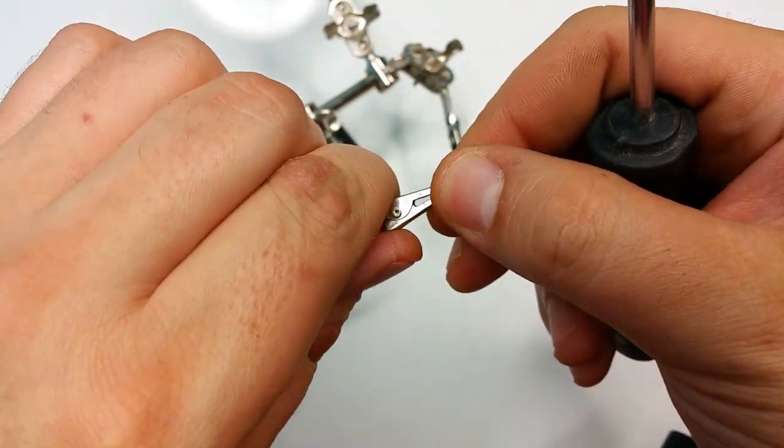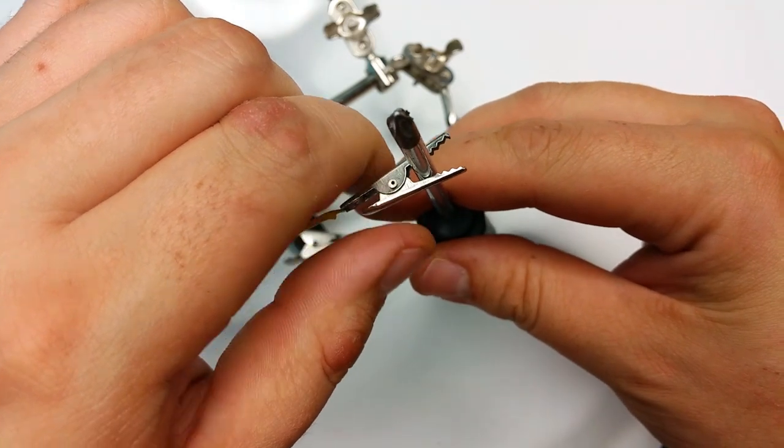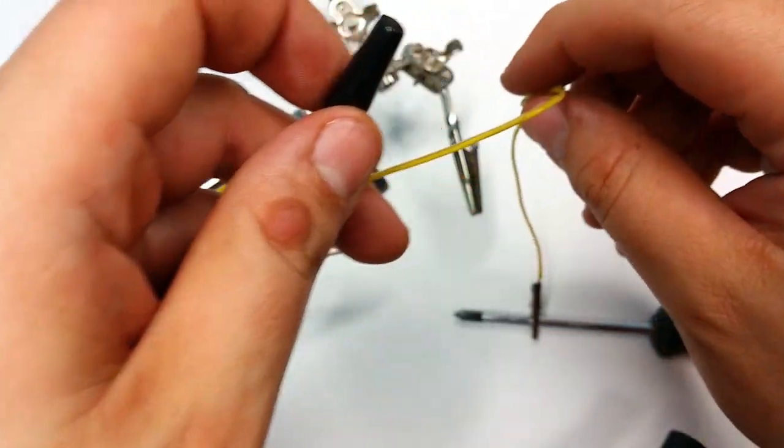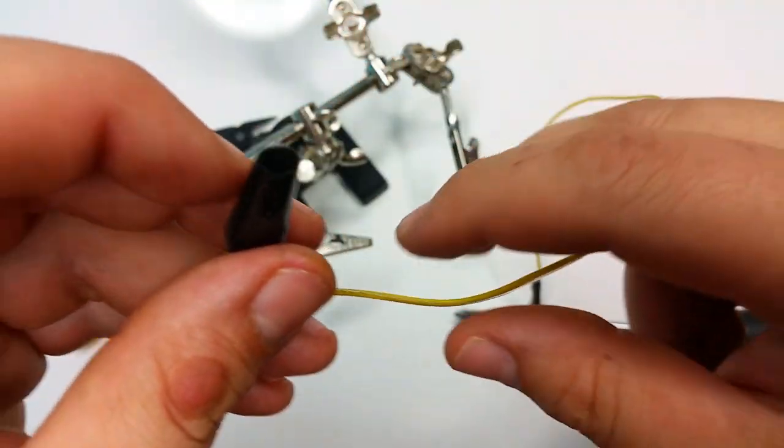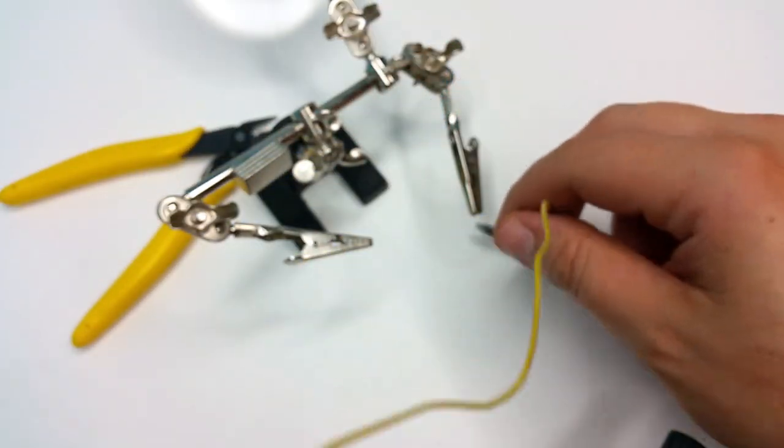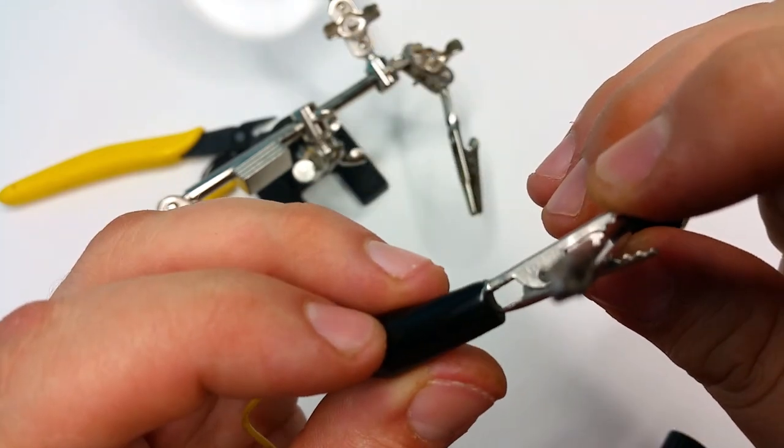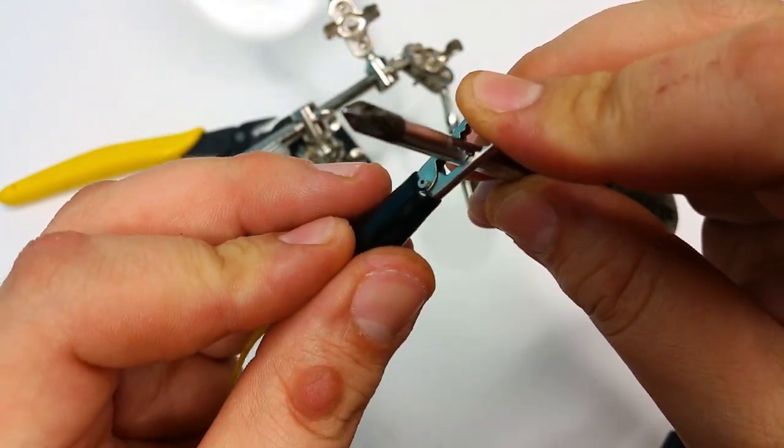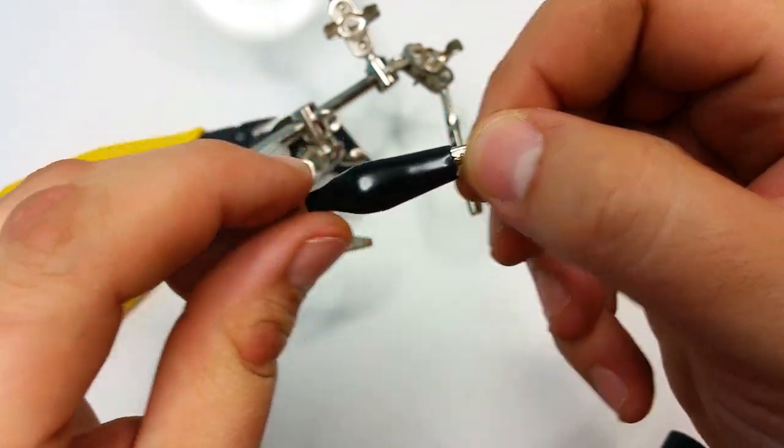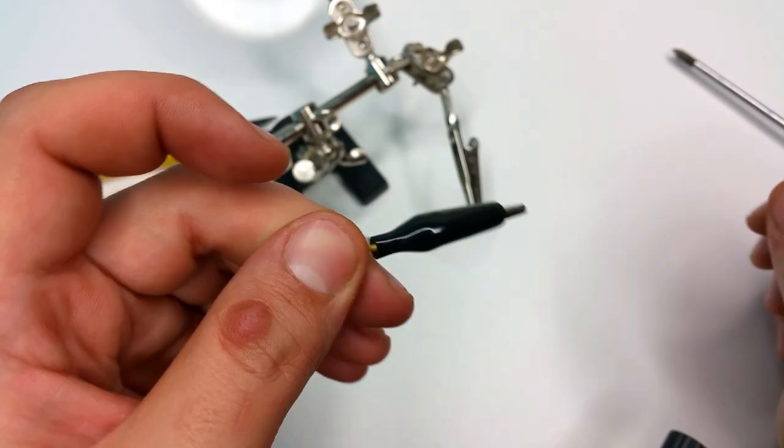Now again, open the clips, put the screwdriver in, take the insulation, just thread it through one side and pull it through. You can let go, and there we have it - crocodile clips are set in place.